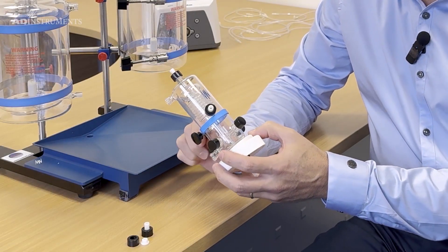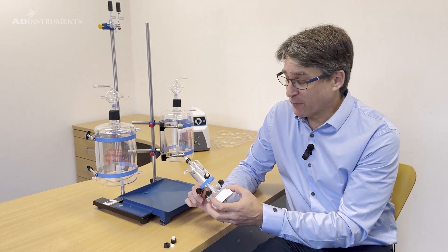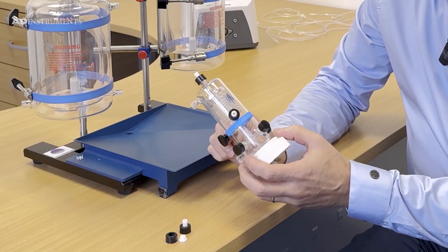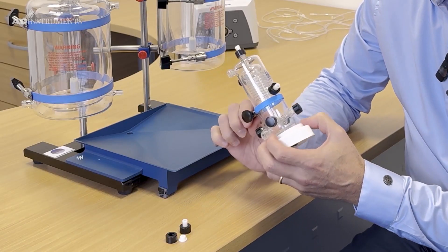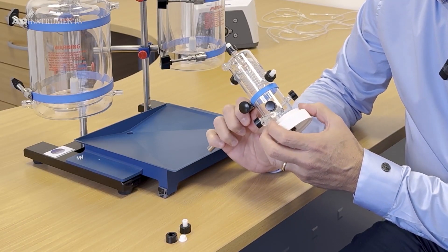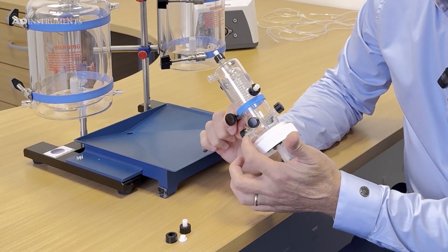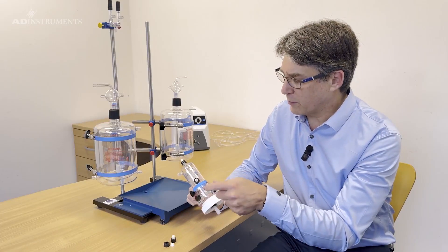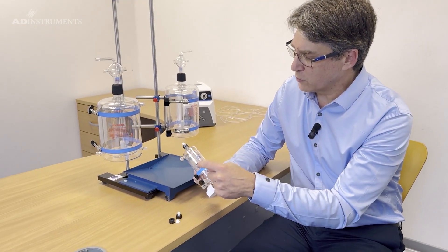The next part is the perfusion core which is actually at the heart of the whole system. It consists of a water jacketed chamber like all the other glassware pieces. It has an inlet port and an outlet port to keep the perfusate at the correct temperature.